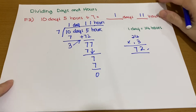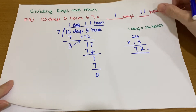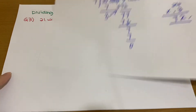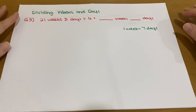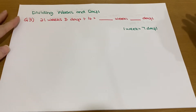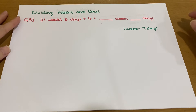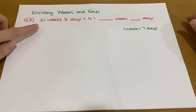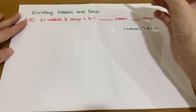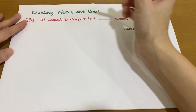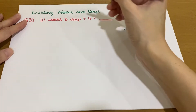Let's continue with the next question. I will show you how to do dividing weeks and days. We have 21 weeks 5 days divided by 4, using the long division method.